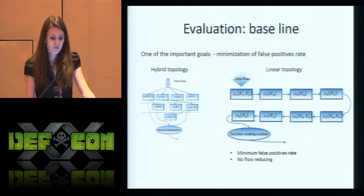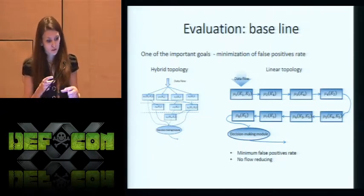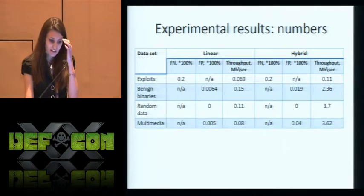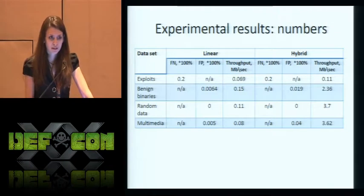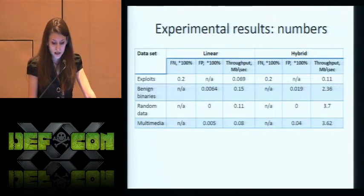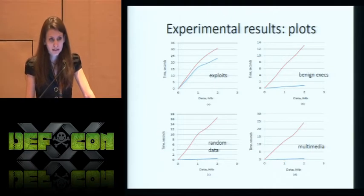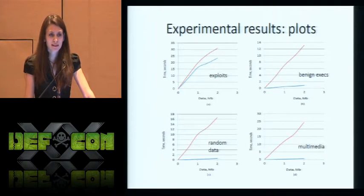One of the important goals of this work was to minimize the false positive rate. We noticed we could achieve this goal in a simple linear topology executing one elementary classifier after another, though there is no flow reduction in that case. We compared our hybrid topology with simple linear topology on four different datasets: an exploit dataset, exploits generated by Metasploit framework, benign Windows and Linux binaries, random data, and multimedia. The red line stands for linear topology and the blue line for hybrid topology. As you can see, on some datasets the hybrid topology is more effective than linear by up to 45 times.